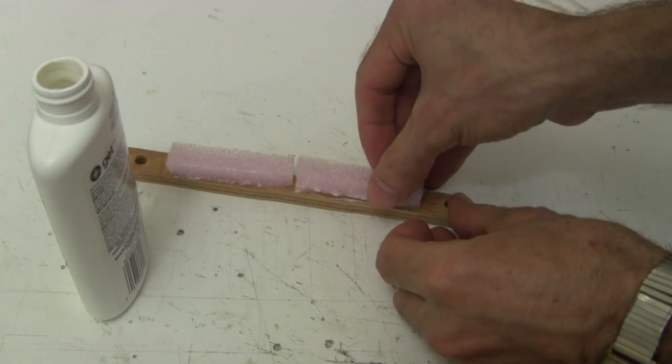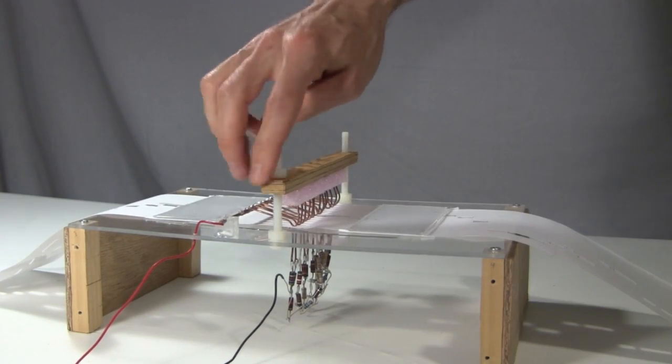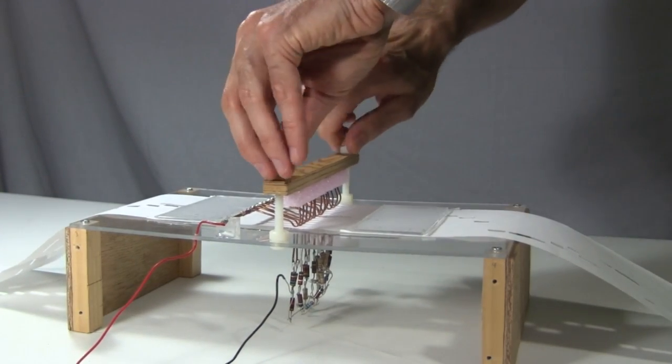So I glued some foam to this long piece of wood, and arranged it so that it pressed down on the dragging wires. The amount of pressure is adjustable by turning these nuts.